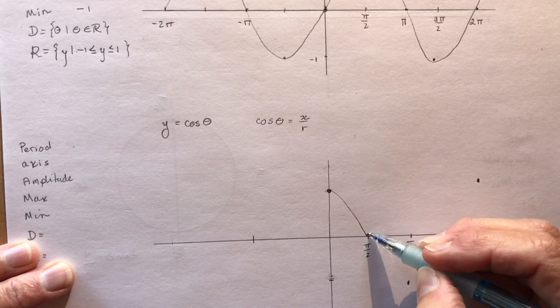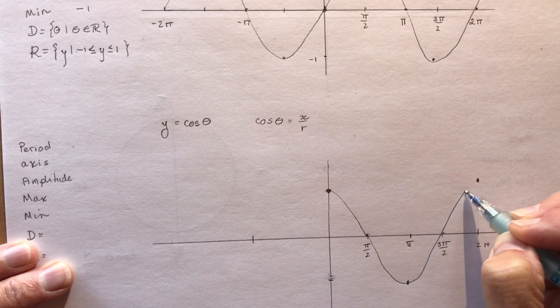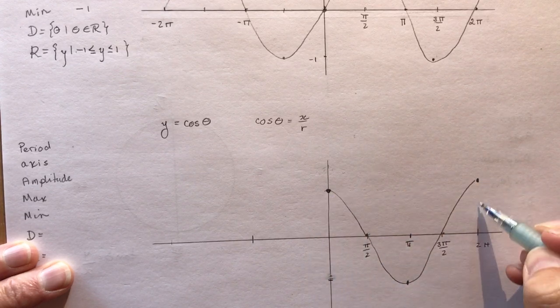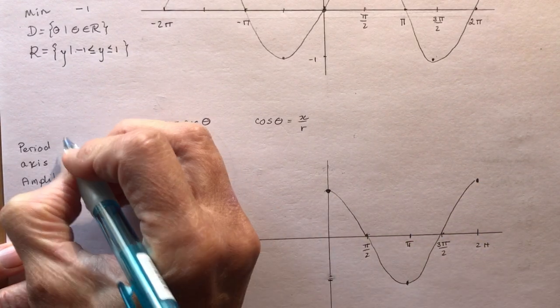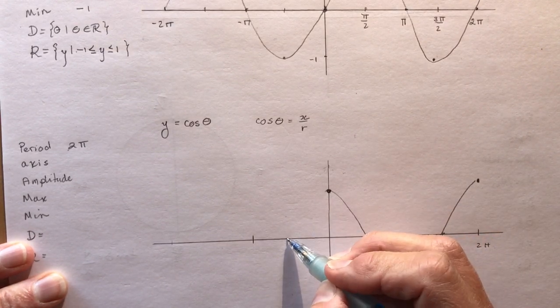Make it nice and curvy. Bring it down. Swoop it around. And up. So that's one complete cycle and again that's 2 pi. So the period is going to be 2 pi. And we do the same thing over here.